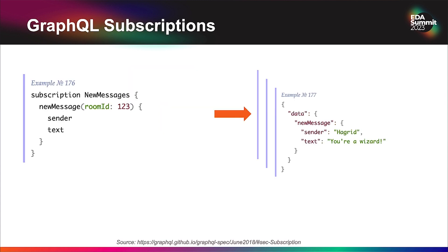With GraphQL subscriptions we're also seeing a lot of live data capability. A GraphQL client can subscribe to a specific message type by specifying arguments in the subscription message and defining what the response payload should look like, then receive data structures as they come in. So GraphQL is starting to offer that kind of capability as well.